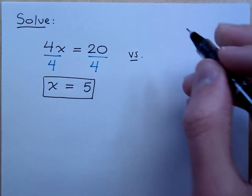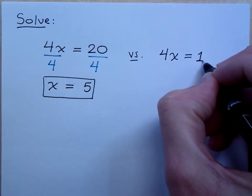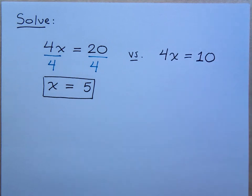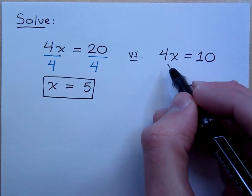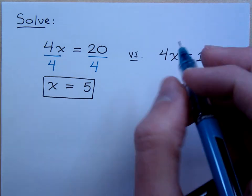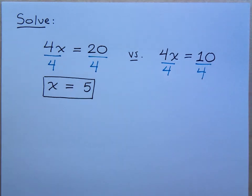Well, what if I were to do something like this? Suppose I have 4x equals 10. How would you solve that? It's the same — just divide by 4. Does it matter what the number is on the other side? No. What matters is the coefficient. You need to get rid of this guy. So I'm going to divide by 4.